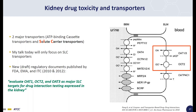In the SLC transporters, a lot of regulatory agencies recommend testing and evaluating OAT1, OAT2, and OAT3 as the major SLC targets for drug interaction testing expressed in the kidney. This is because of the relative abundance of those three transporters as well as their functionality.